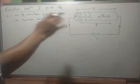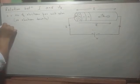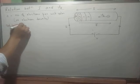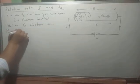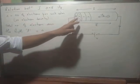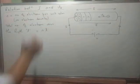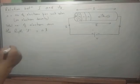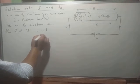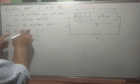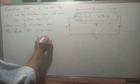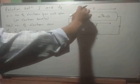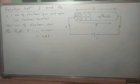Over the entire length L of the conductor, the total number of electrons equals n times the volume of the conductor. The volume of the conductor is A times L, so the total number of electrons is n × A × L.